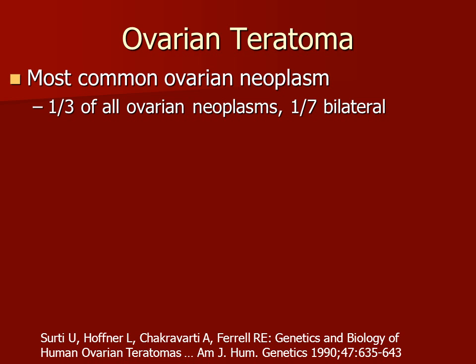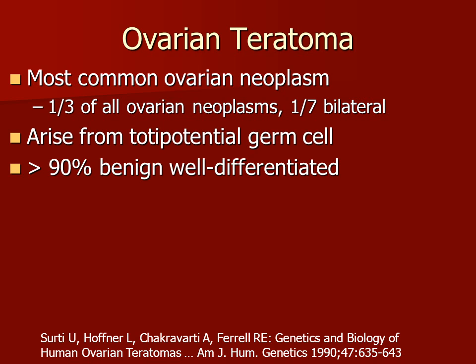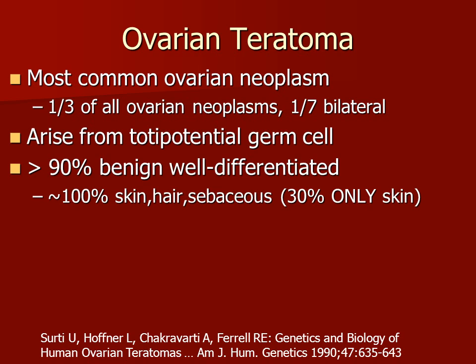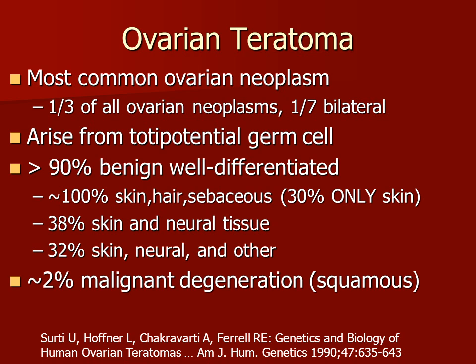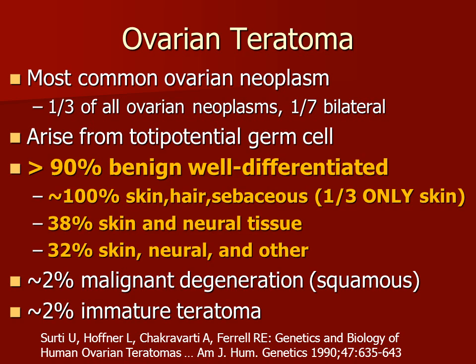Ovarian teratomas are the most common ovarian neoplasm, representing about one-third overall. One out of seven patients will have bilateral ovarian teratomas. They are thought to arise from totipotential germ cells. The vast majority are benign and well-differentiated. Almost 100% will be making skin, hair, and sebaceous material. About 30% will have only skin elements within the cyst. About 38% have skin and neural tissue. And about another third have skin, neural, and other types of differentiation. Malignant change is very uncommon at approximately 2%, and about 2% of patients with ovarian teratoma have immature histologic elements.